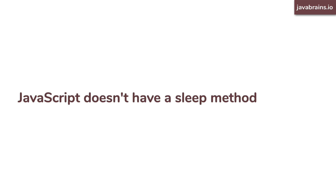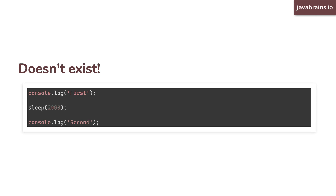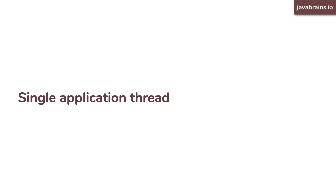First, let's start with the fact that JavaScript does not have a sleep method. For example, let's say you want some line of code to execute, then pause for two seconds, and after two seconds your second line of code needs to execute. You really cannot say sleep for 2000 milliseconds — this doesn't work. The reason is, if JavaScript had something like this, it would basically block what's essentially the only thread that runs the application. That's why you don't have a sleep or wait method in JavaScript.